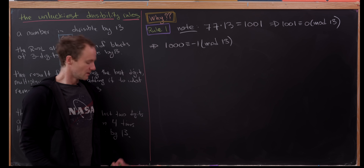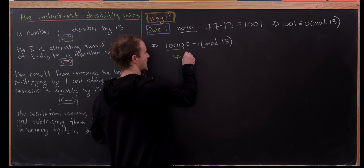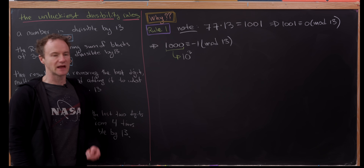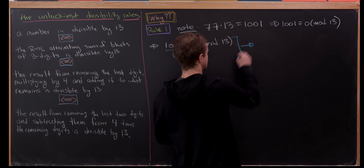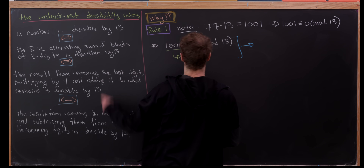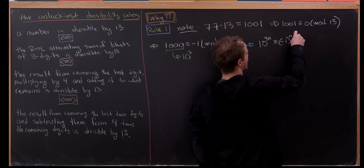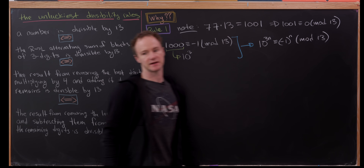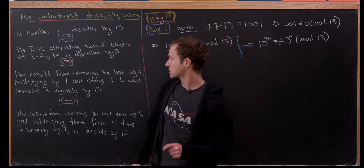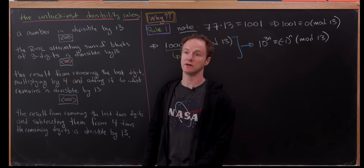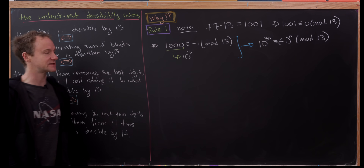Since 1000 is the same as 10 cubed, we can raise both sides to the nth power to get a useful equation: 10 to the power 3n is congruent to (−1)^n modulo 13. We'll then show that a number is congruent to this alternating sum expression mod 13 — meaning they're divisible by 13 at exactly the same time.